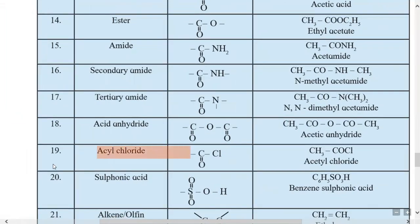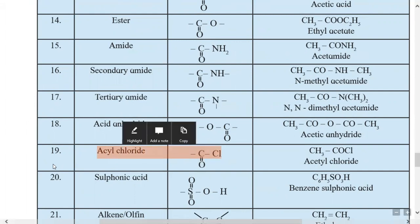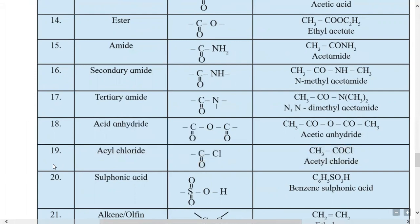The nineteenth type is acyl chloride. Acyl chloride has functional group -COCl, a combination of the ketone and halide functional groups. Example: CH3COCl is acetyl chloride. Replacing the CH3 group with hydrogen gives formyl chloride.